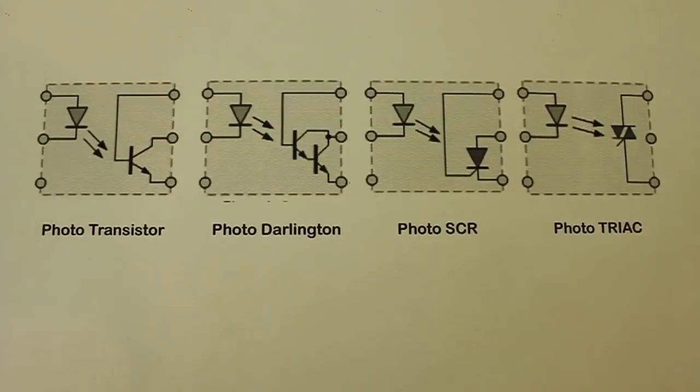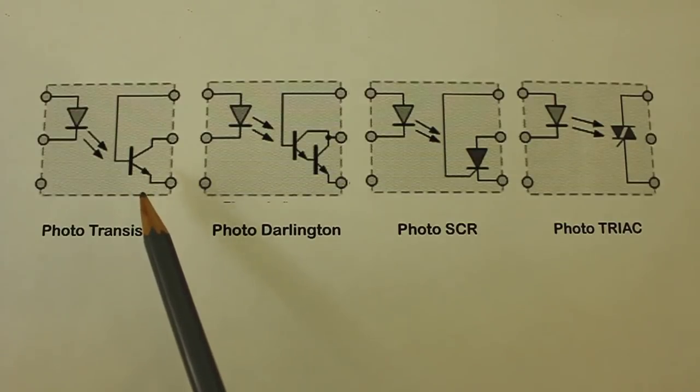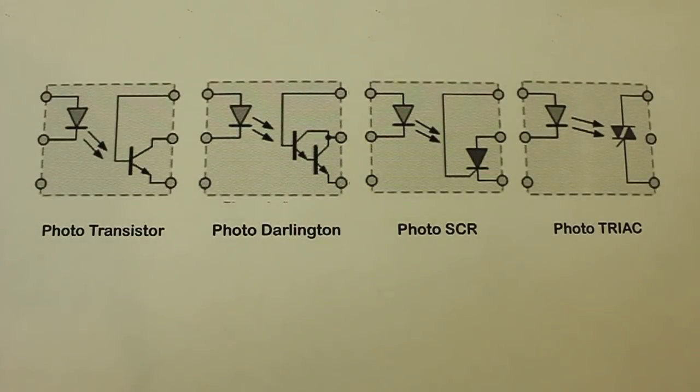There are several types of optocouplers. This is the optocoupler that internally has a photo transistor, as we just explained it, and this other one has a Darlington transistor. This is for added sensitivity.